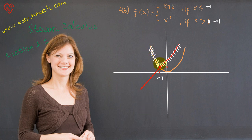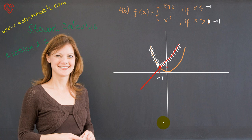The graph of f(x) is the combination of the red and orange pieces. I need to wrap up the video time here, so see you on the next video.